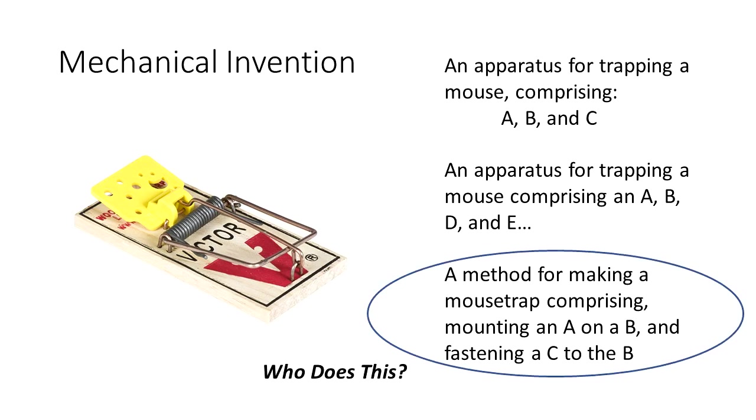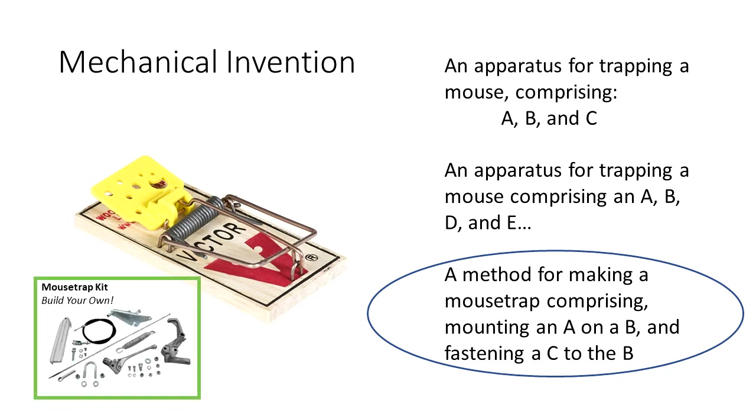Let's take a second look at our method for making the apparatus. Who does this? Could it be a factory that assembles these things? If so, then this claim set may be worth having to provide some protection on the manufacturing of the apparatus. But what if it was sold as a kit and the end consumer assembles the kit? Then who's making the mousetrap? If it's the end user, then again we might decide to forego this claim set.